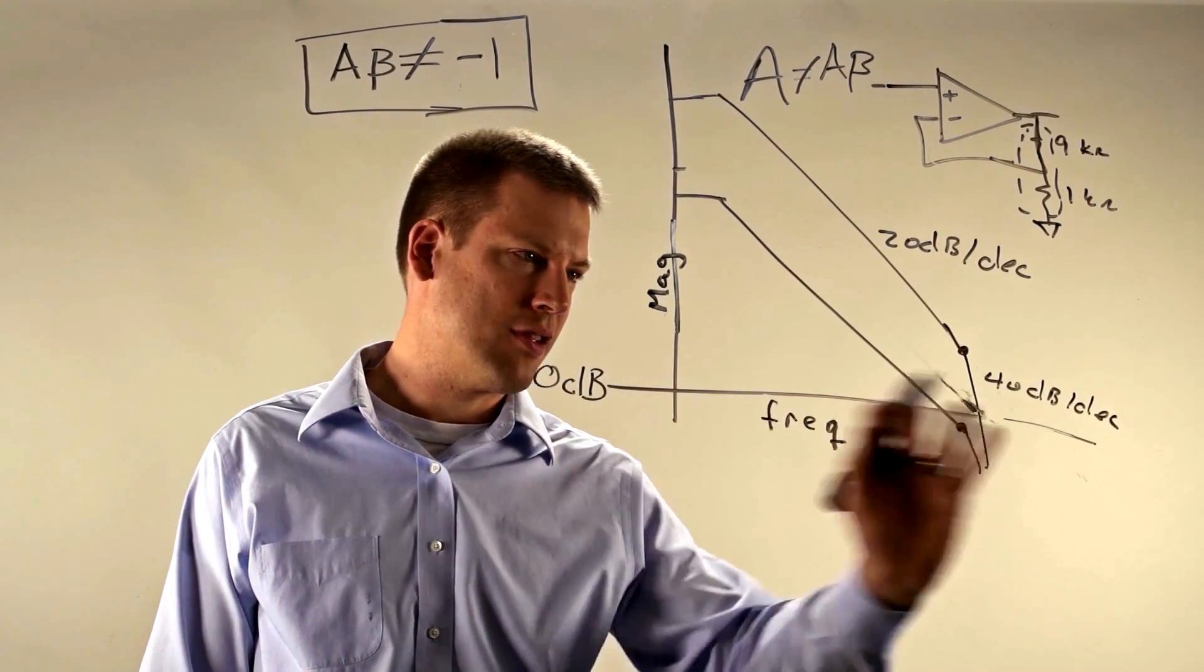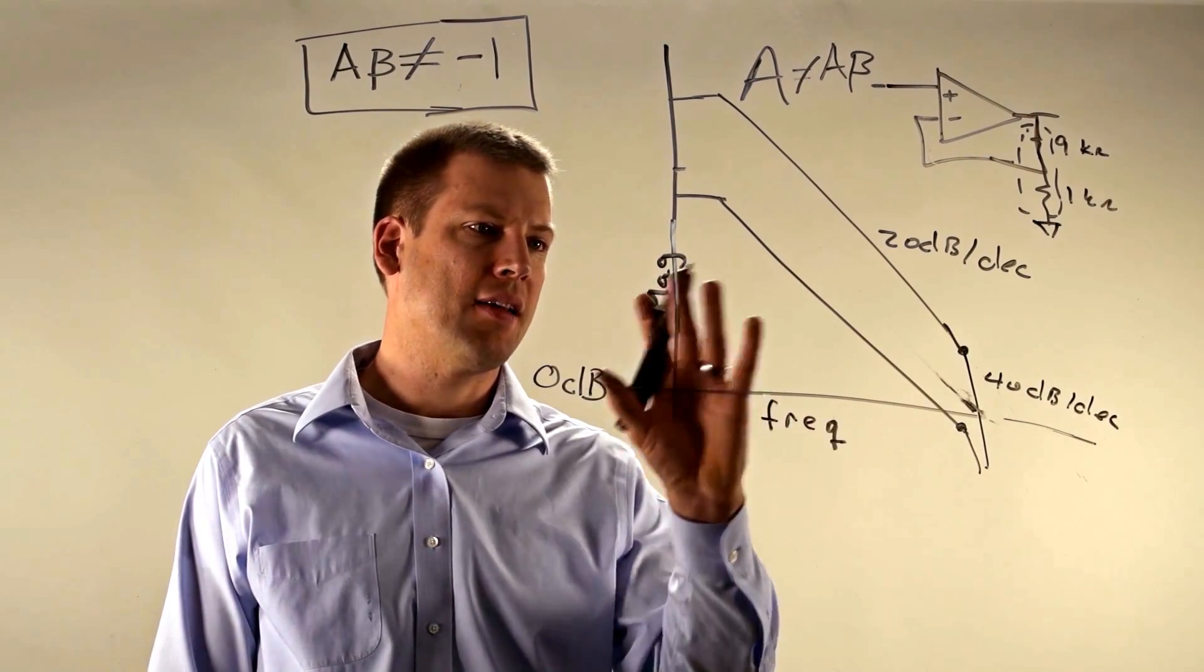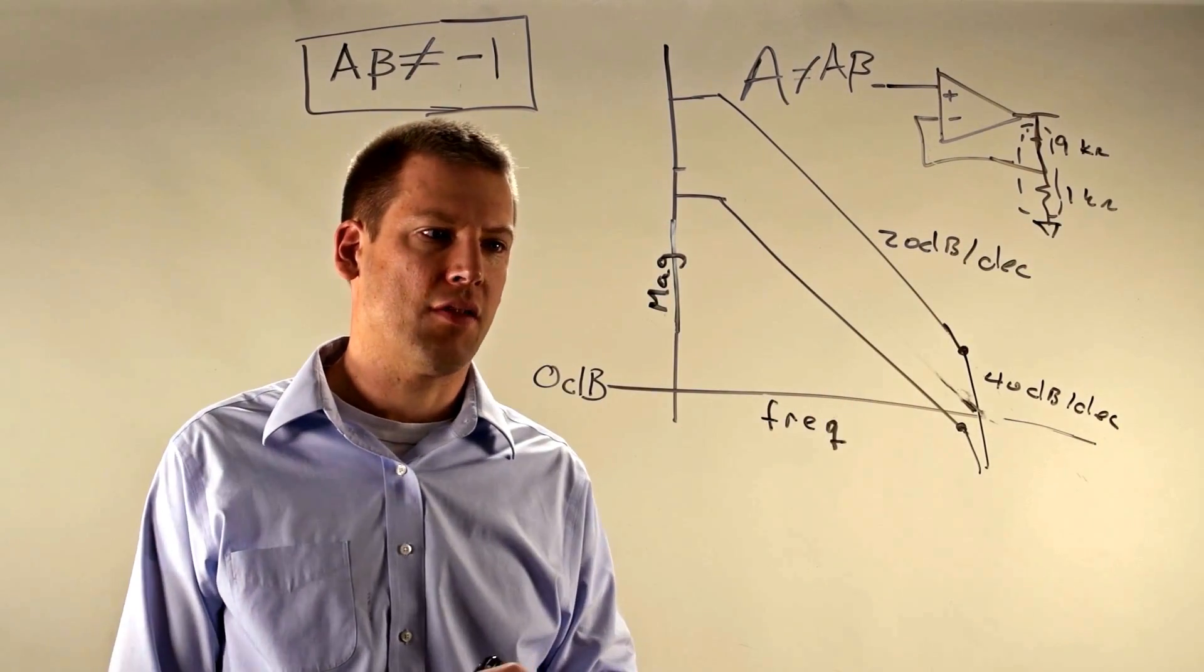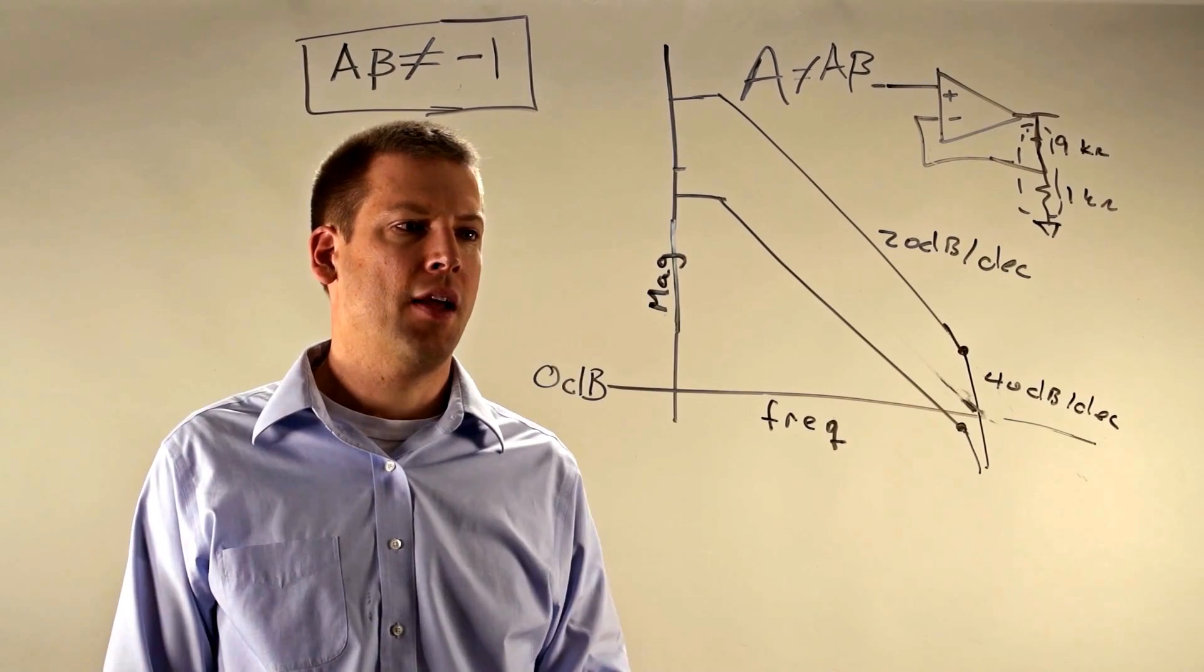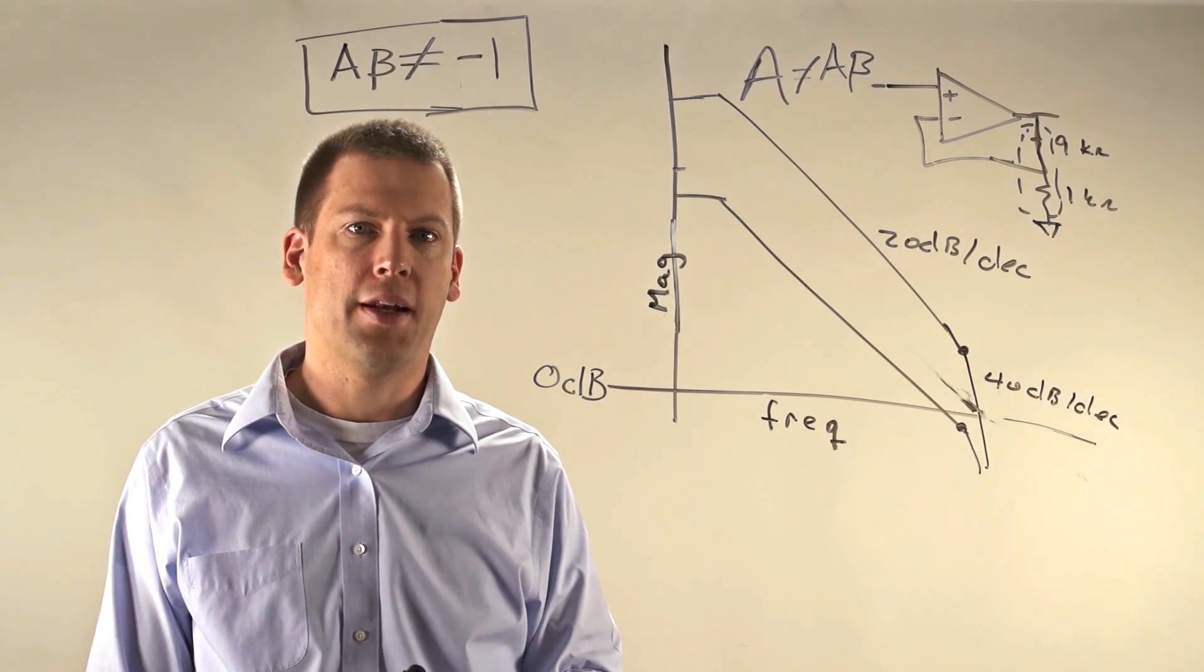So now as we go through this 0 dB, we have our nice 20 dB per decade slope. And so this circuit in the non-inverting configuration would be stable. So that's the scoop on these few op amps on the market that aren't stable at a gain of 1.